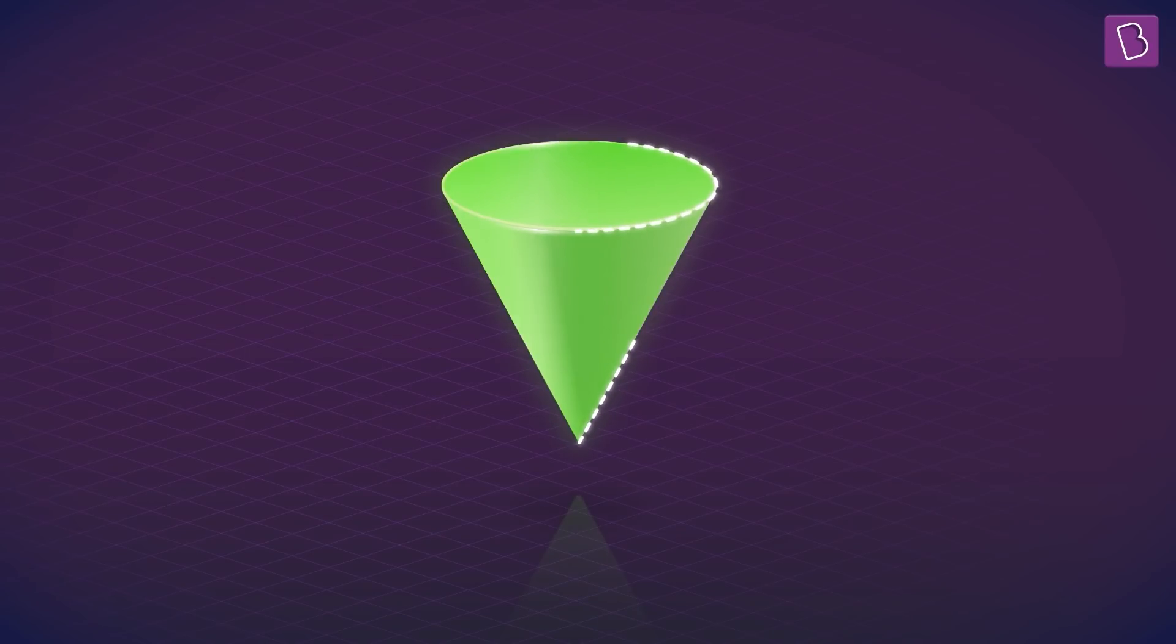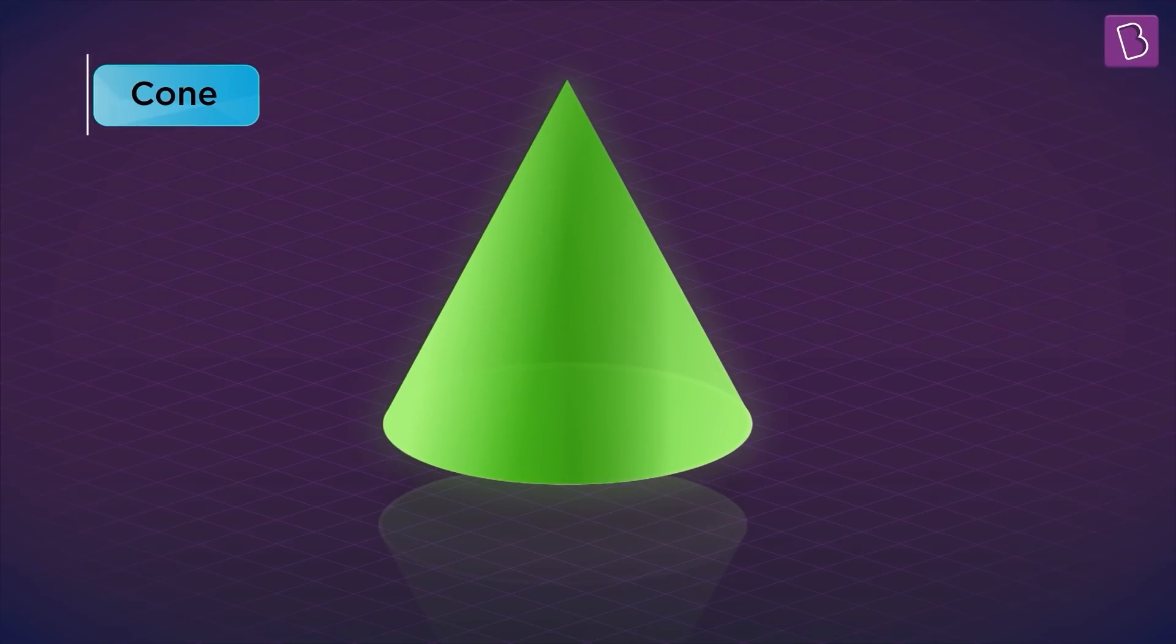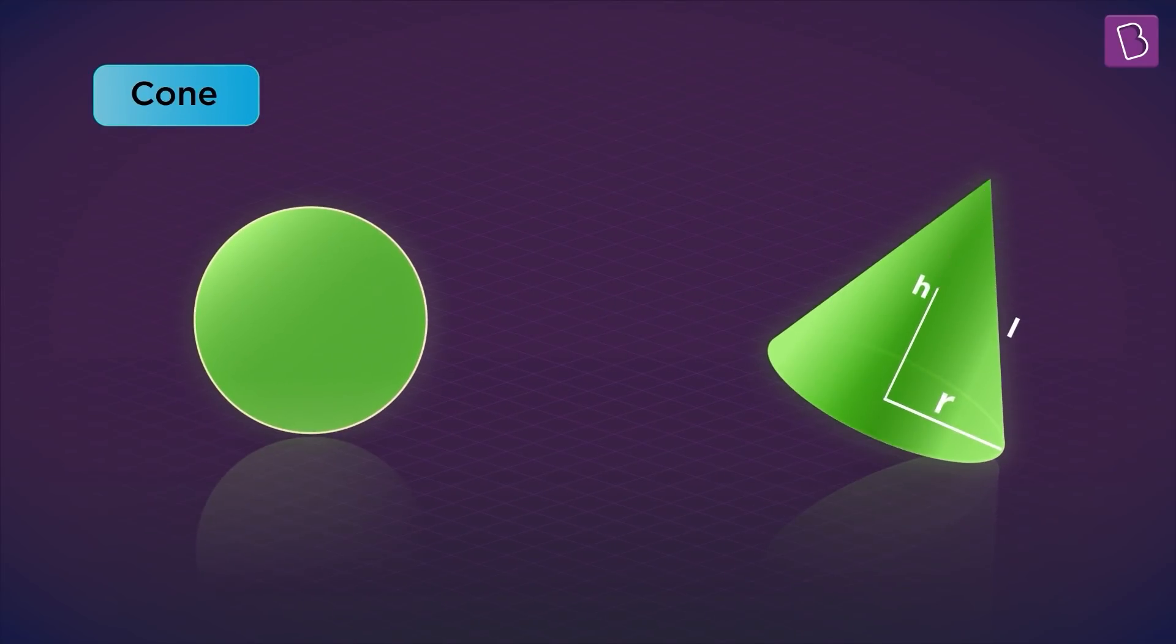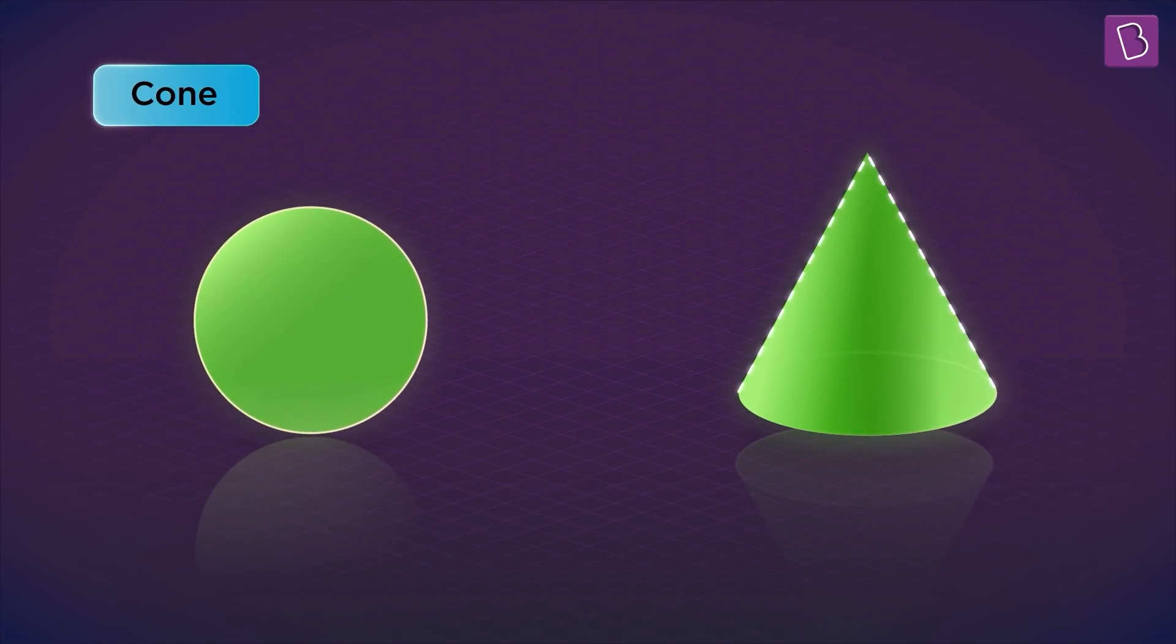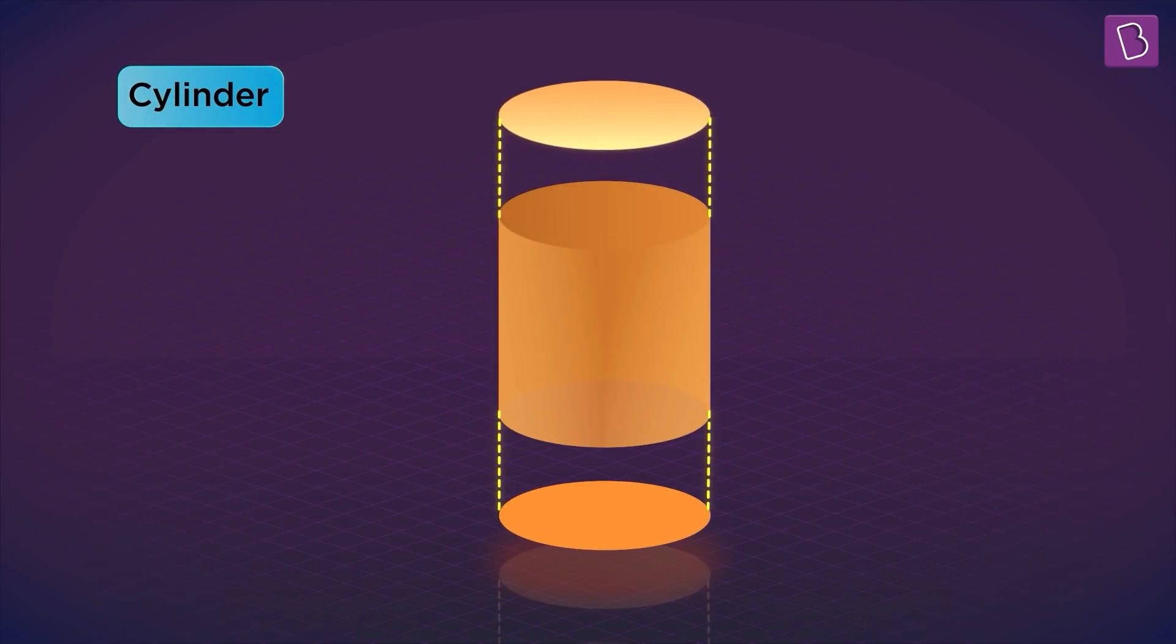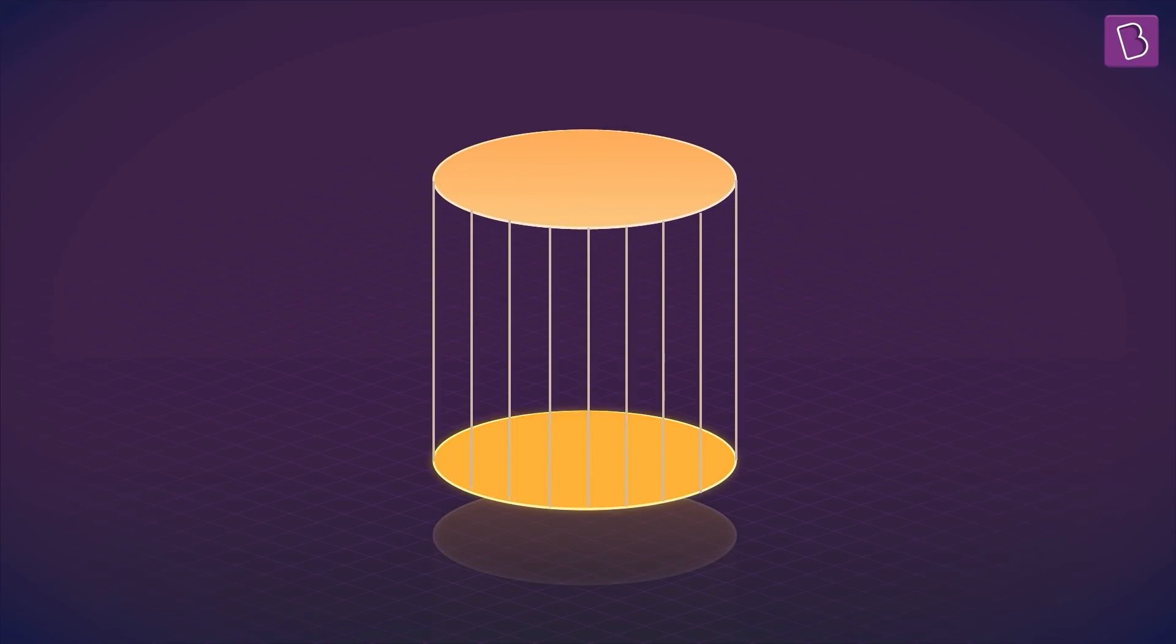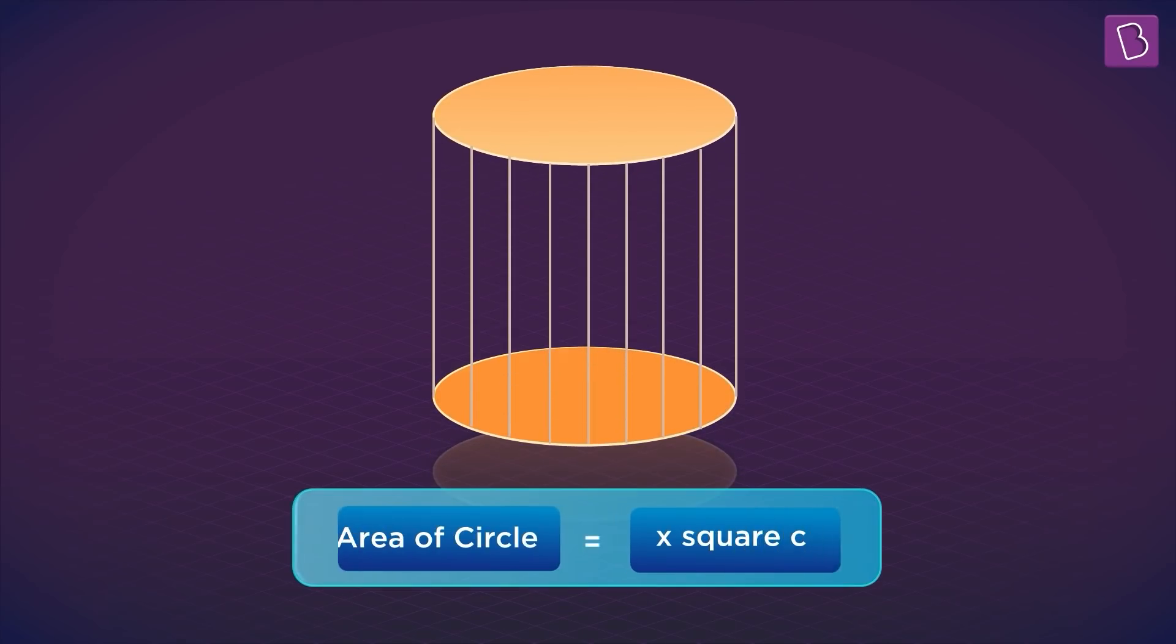Let us see how we can know how much volume a cylinder has. Look, the scooper is cone-shaped and the ice cream tub is cylinder-shaped. A cone is a three-dimensional object with a circular base and a pointed top joined by a curved surface. And a cylinder is a three-dimensional solid that connects two parallel circular bases joined by a curved surface. As we can see, the base of the cylinder is a circle. Let the area of this circle be x square centimeters.